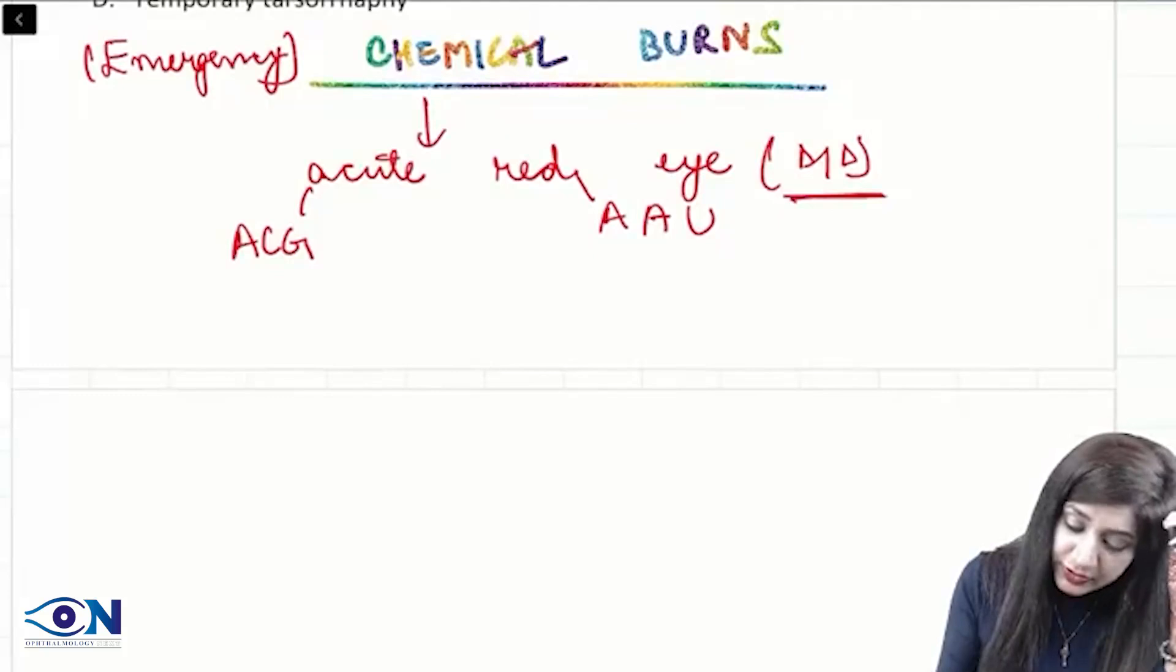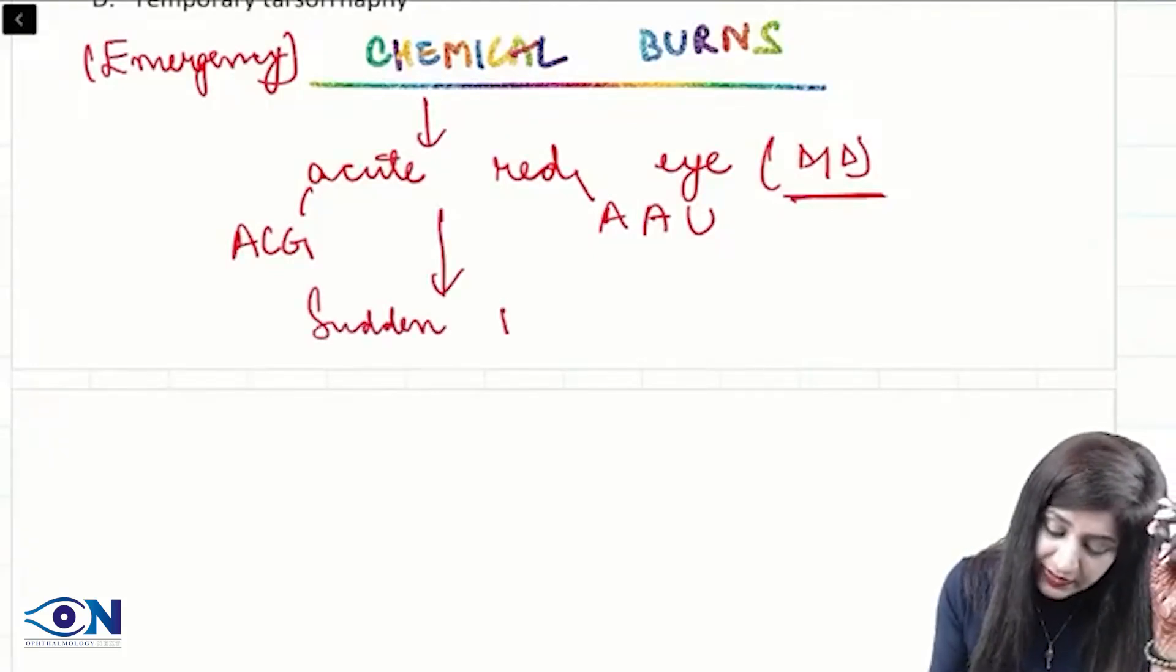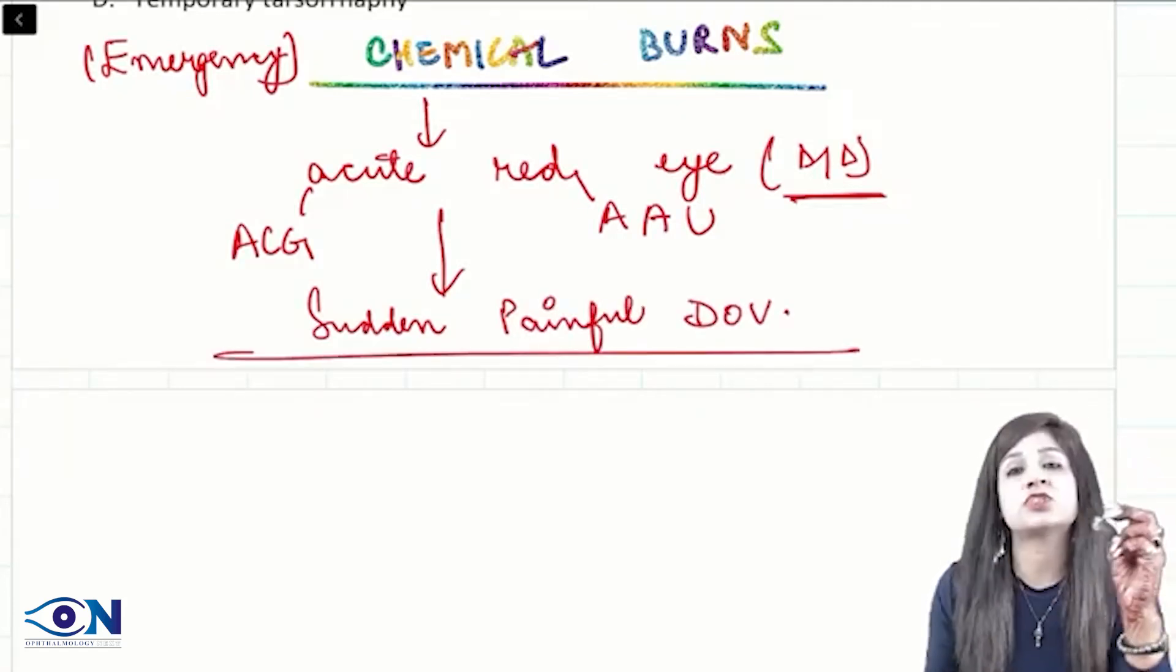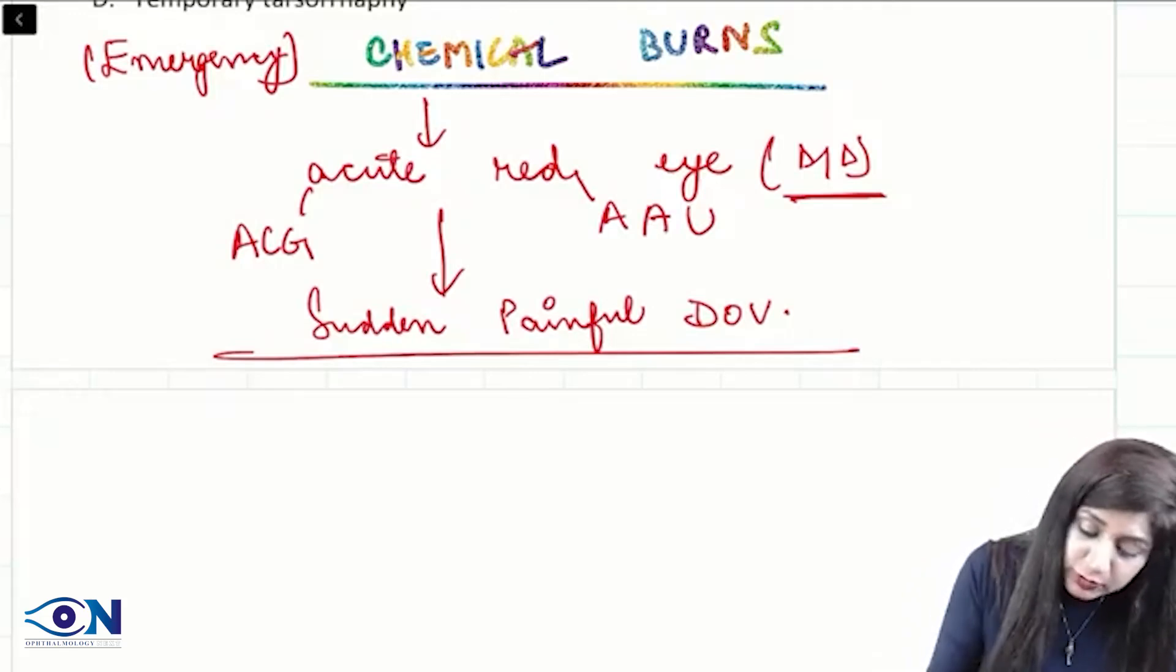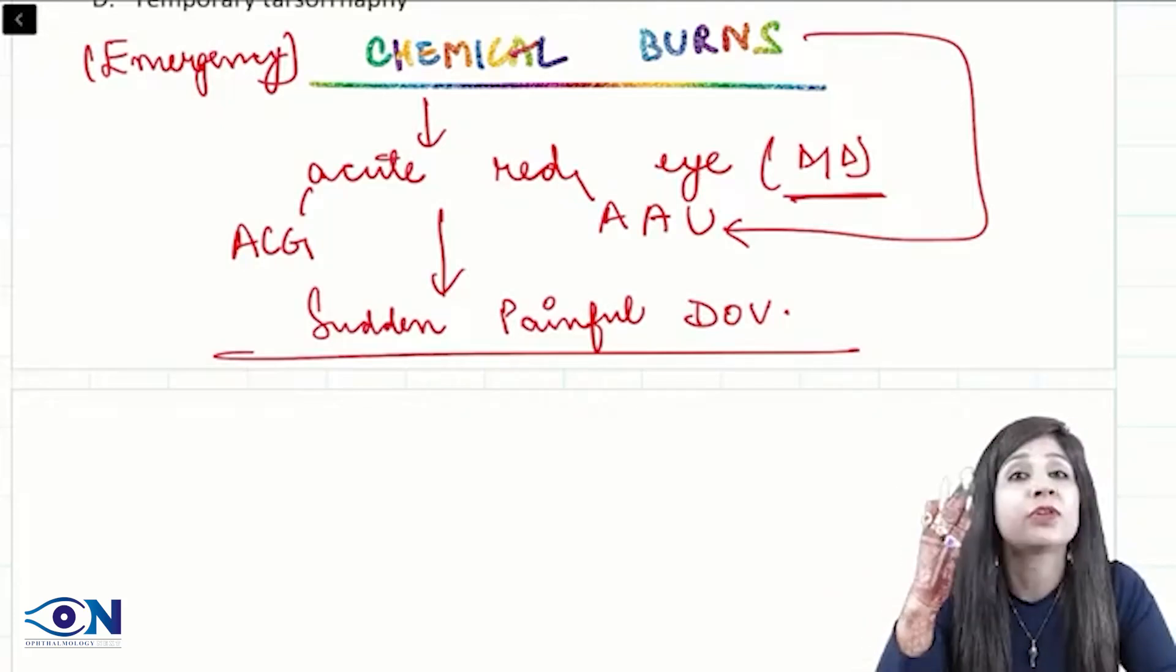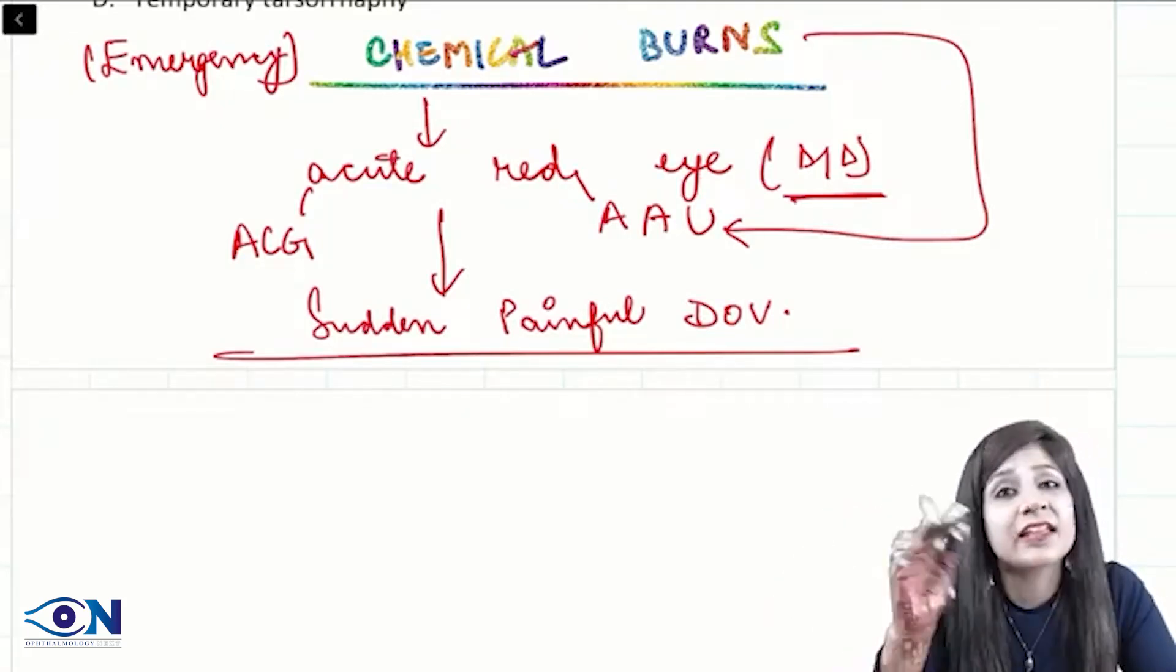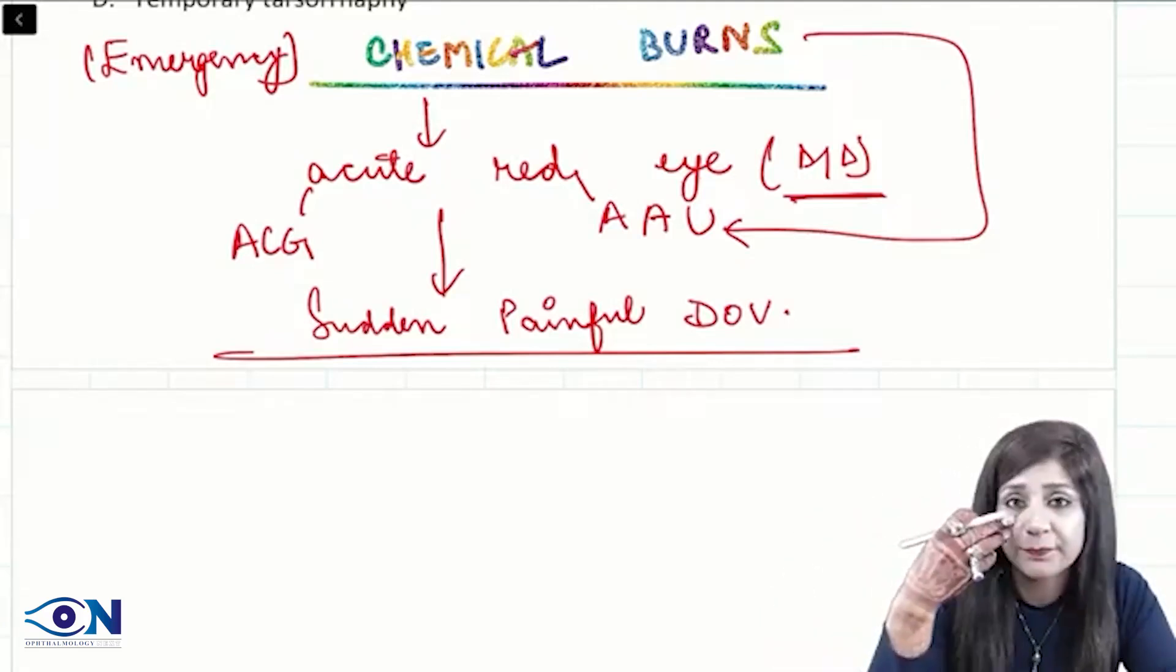The type of vision loss that you are getting here will be sudden as well as painful diminution of vision. This patient of chemical injury can also present because due to the chemical burn, it will lead to acute anterior uveitis. We will have lot of inflammation, and therefore indirectly it is the acute anterior uveitis presenting with acute red eye.